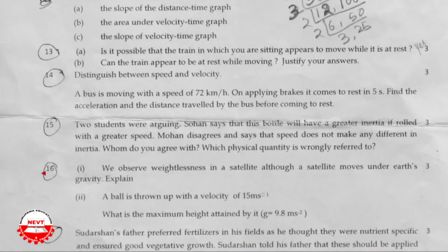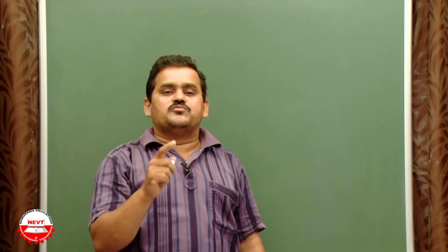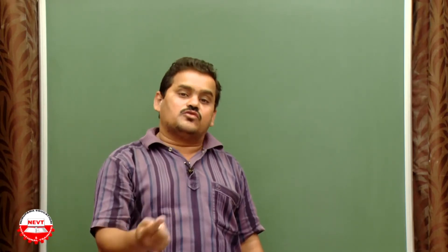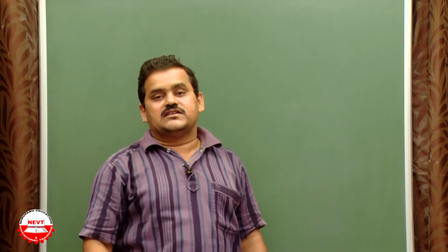Question number 16: we observe weightlessness in a satellite although a satellite moves under Earth's gravity — explain. Weight depends upon acceleration due to gravity, that means the pulling force of Earth produces an acceleration. If you are moving with an acceleration of 9.8 m/s² or closer to it, you feel weightlessness.